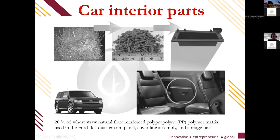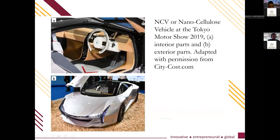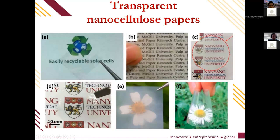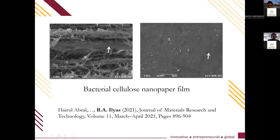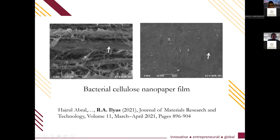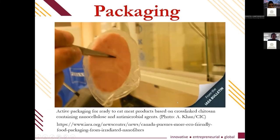Nanocellulose has also been used in car manufacturing. One example is 20% wheat straw natural fiber reinforced polypropylene. Nanocellulose was featured behind the Tokyo Motor Show. Our team also examined bacterial cellulose nano paper film, published in the Journal of Materials Research and Technology — you can read further in that article.